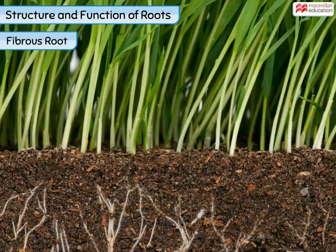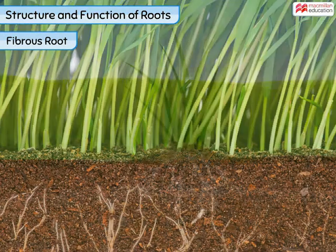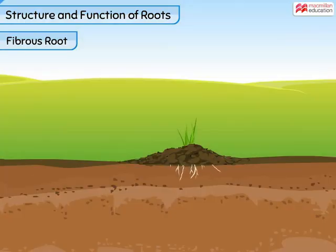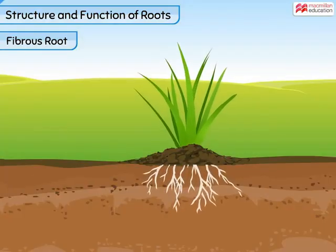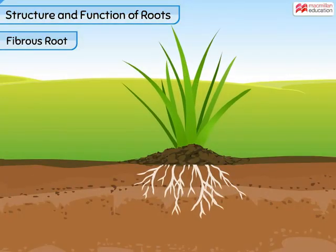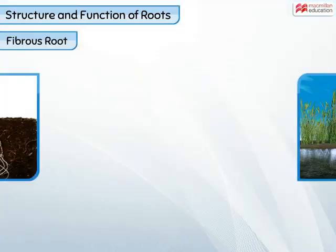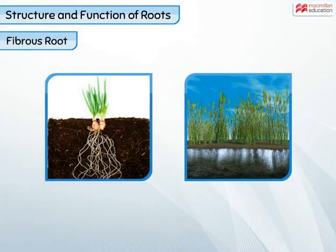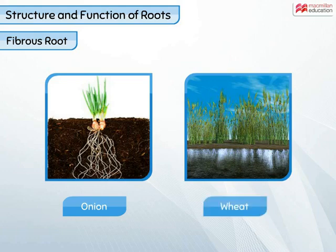The fibrous roots are seen in plants like grass. In this type of root system, numerous roots of the same size grow from the base of the stem. These roots grow sideways, in a bunch, and do not go very deep into the soil. Some plants that have fibrous roots are onion and wheat.